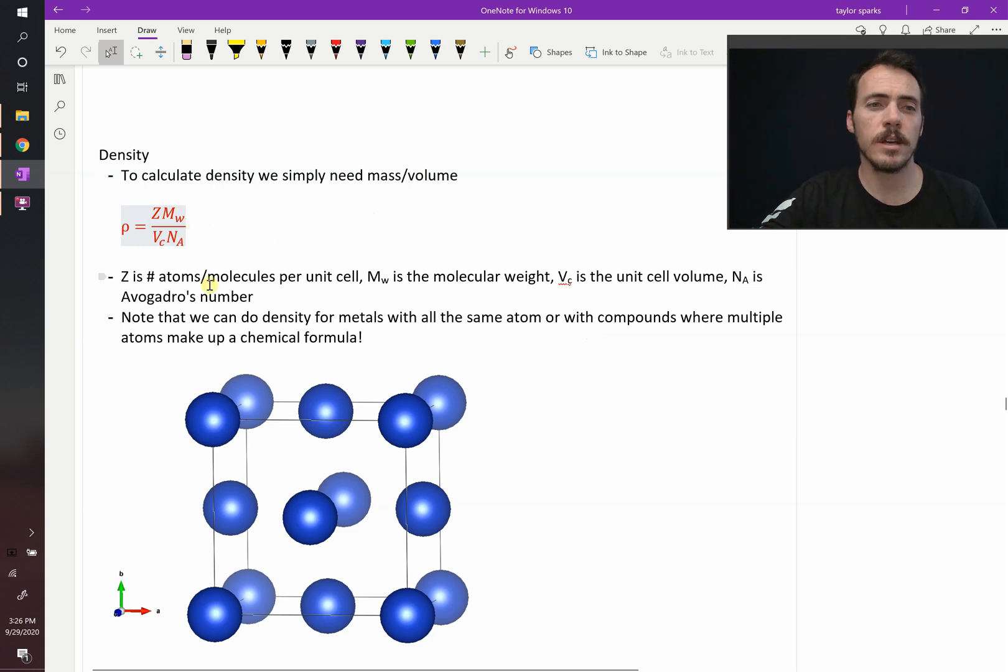What is Z? Z is the number of atoms or molecules per unit cell. There's a difference there. We're going to show you the example. MW is the molecular weight of the atom or the molecule. VC is the unit cell volume and NA is Avogadro's number.